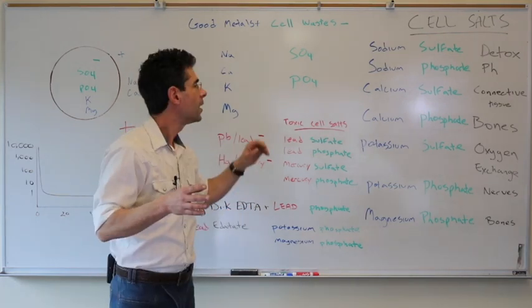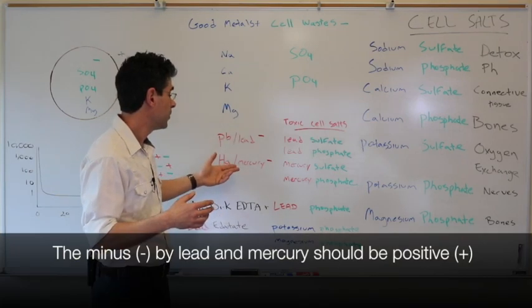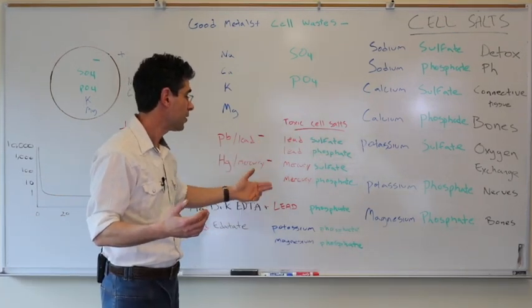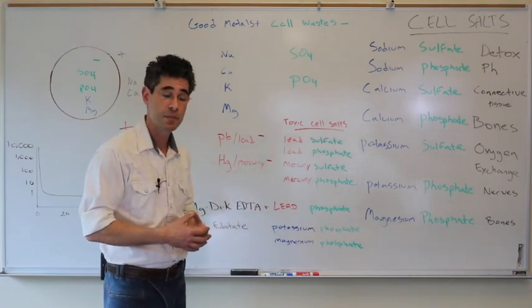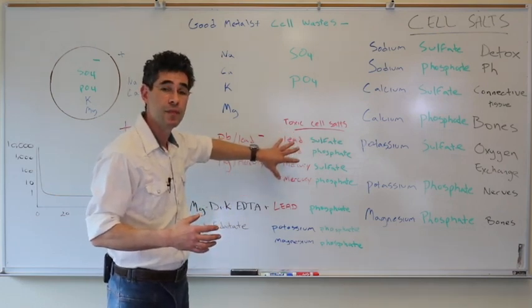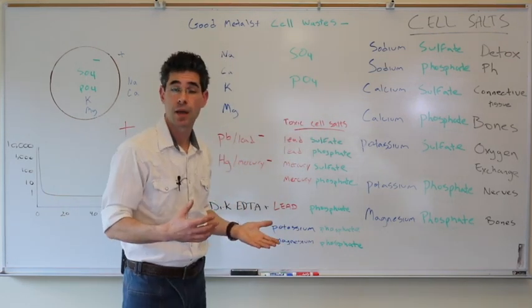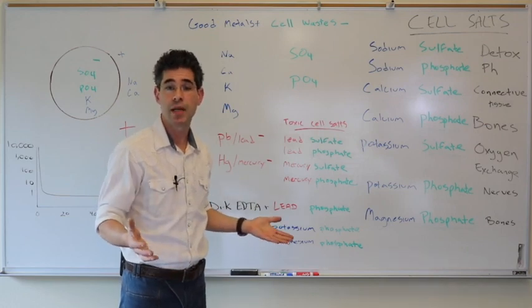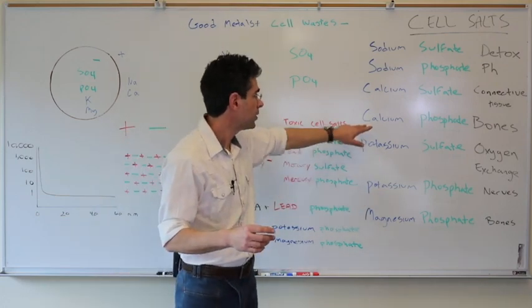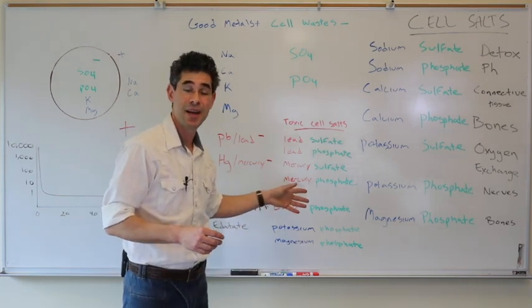The trouble is these aren't the only metals in the environment. There are also toxic metals like lead and mercury, and they can make toxic cell salts like lead sulfate, lead phosphate, mercury sulfate, or mercury phosphate. Well, the problem is none of these are soluble. If they were soluble like sodium sulfate or sodium phosphate, then however toxic they are you'd let them go in the urine and within a day they're gone. But they're not soluble. They're more like magnesium phosphate or calcium phosphate or calcium sulfate. They don't dissolve in water and so they stick around and they're very hard to get rid of.